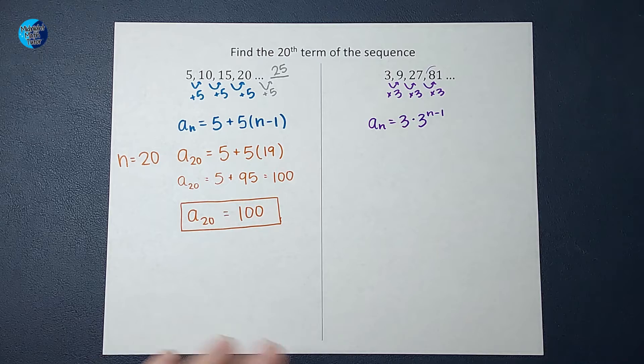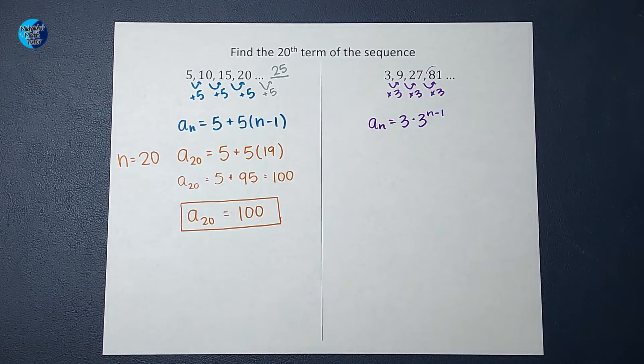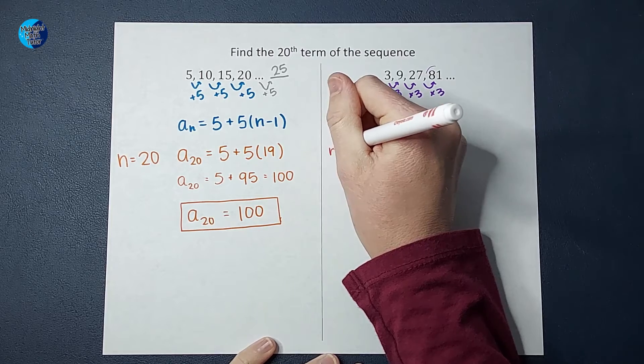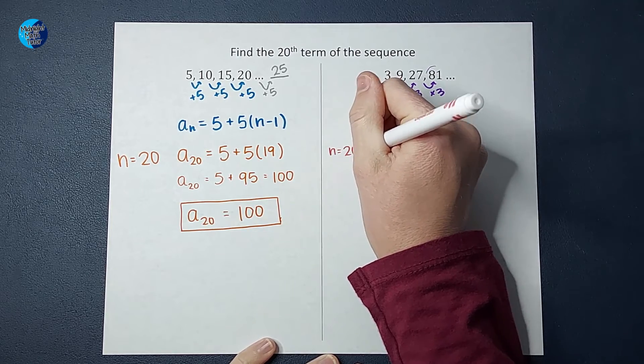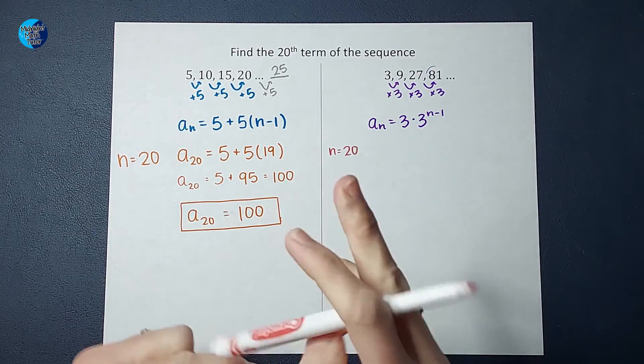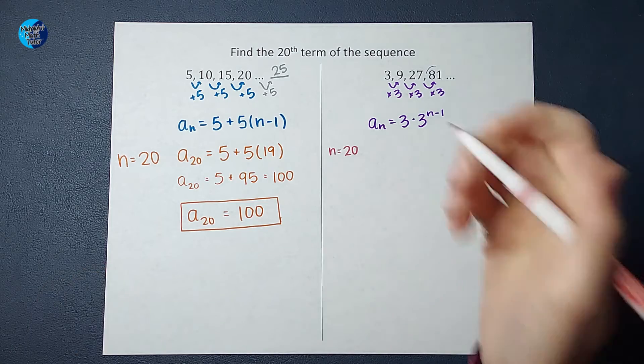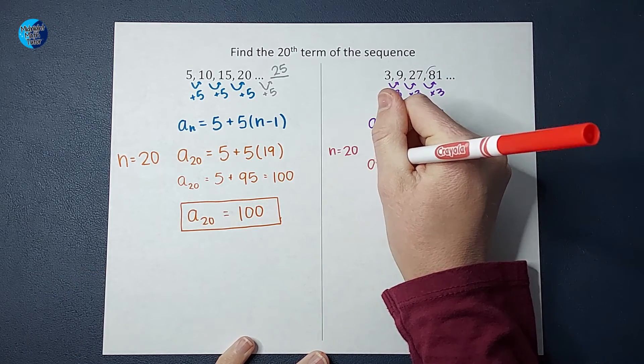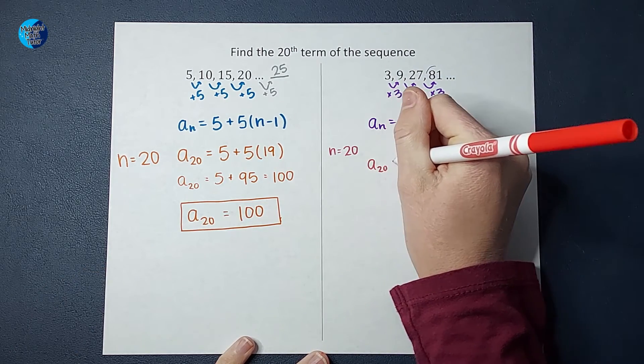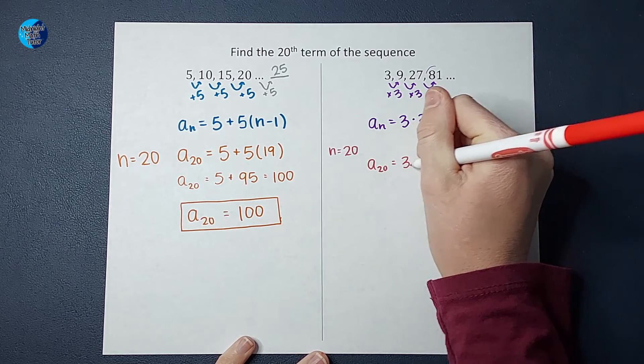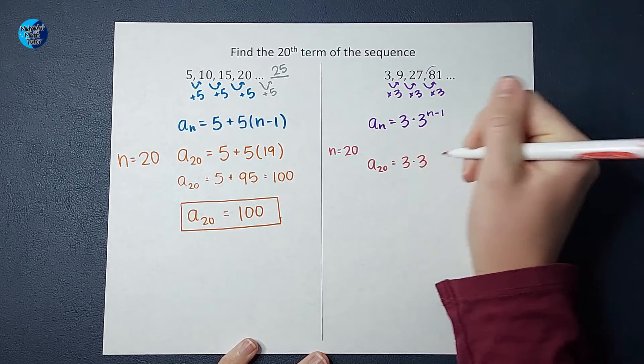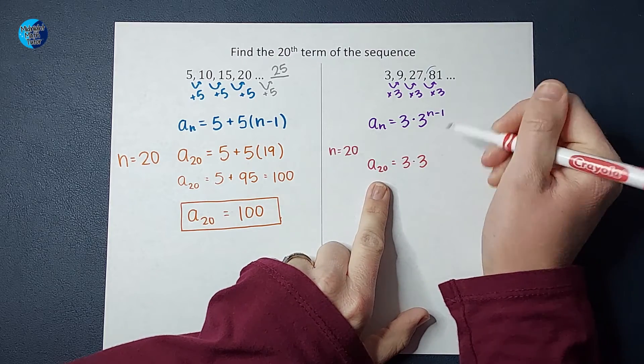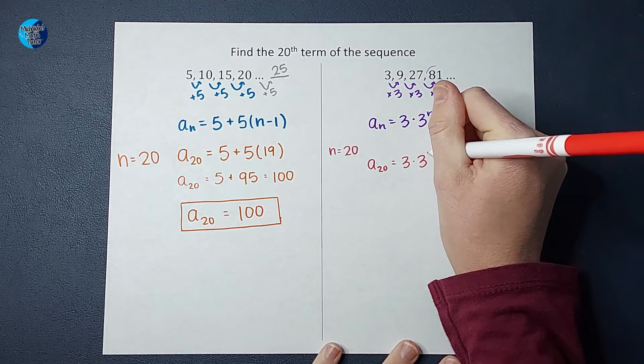Now let's use it where, let's change color because I like that, where n equals 20. So I want to know the 20th term in this sequence. It's about to get crazy, guys. Just hold on. So we want to know where n is 20. So a sub 20 equals three times three to the power of n minus one, so 20 minus one, which is 19.